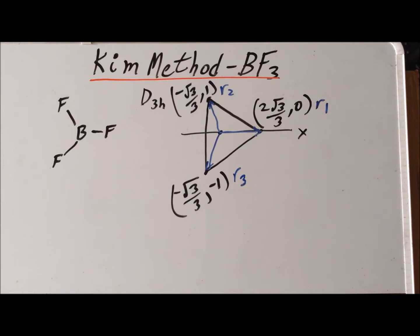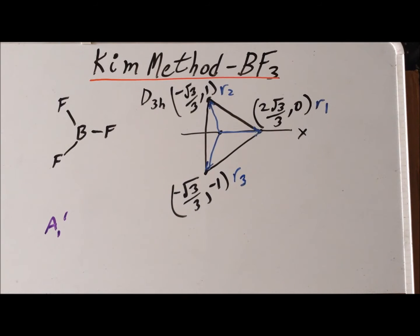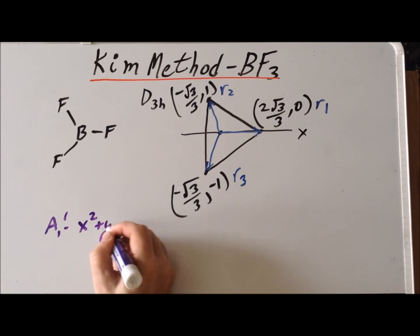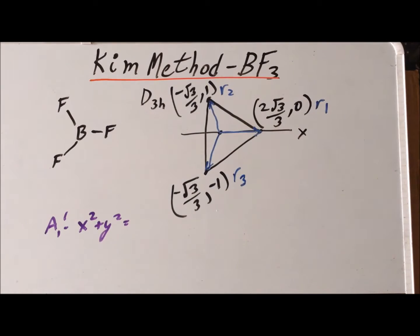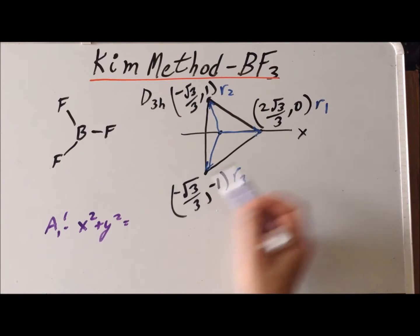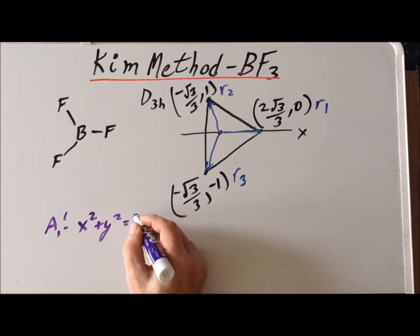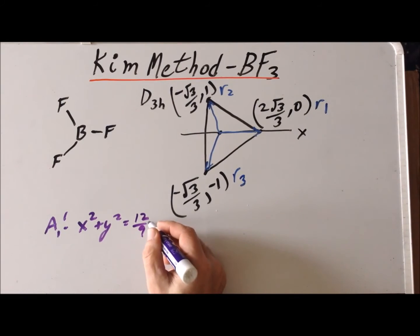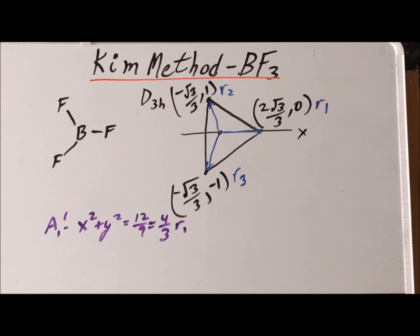Next, we note that in the character table for D3H, the irreducible representation A1 prime has a basis function of x squared plus y squared. Within the Kim method, the coefficient for each of the R1, R2, or R3 vectors within this irreducible representation are given by substituting the values of x and y for that particular point into the basis function. So if we do that for R1, y squared is 0 squared, and x squared is the square of 2 times the square root of 3 over 3, which gives us 12 ninths, or 4 thirds. And similarly, for R2 and R3, we have exactly the same coefficient of 4 thirds.